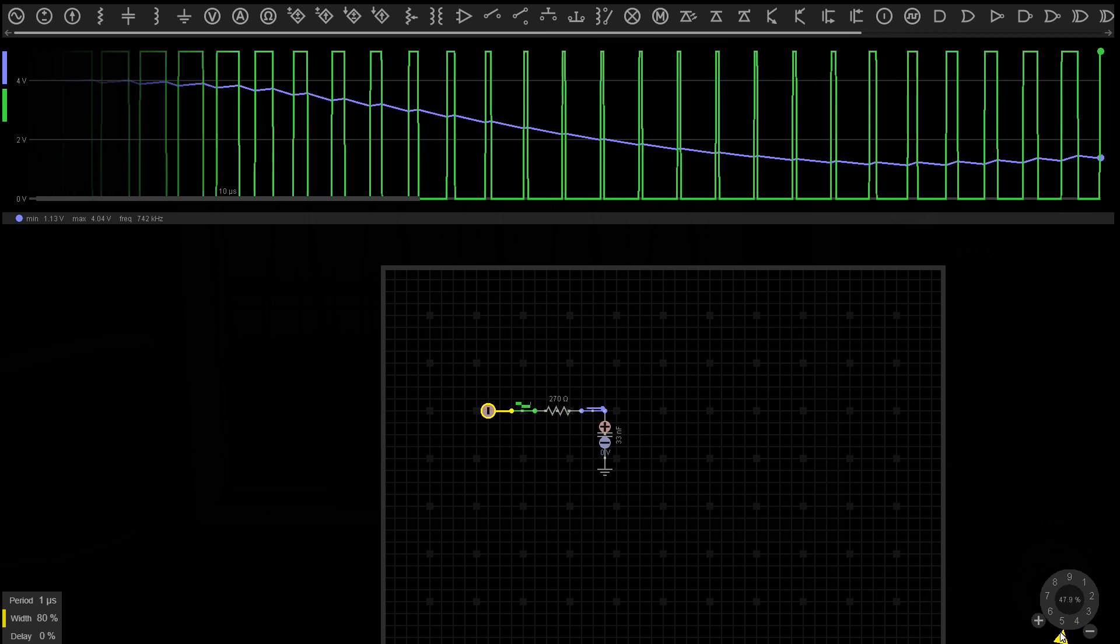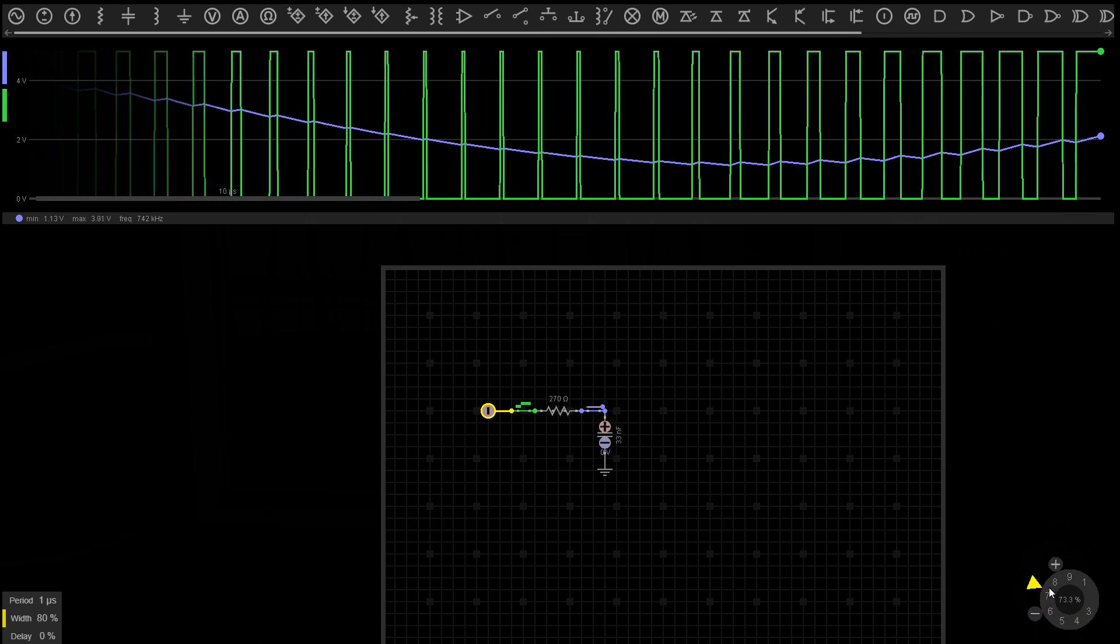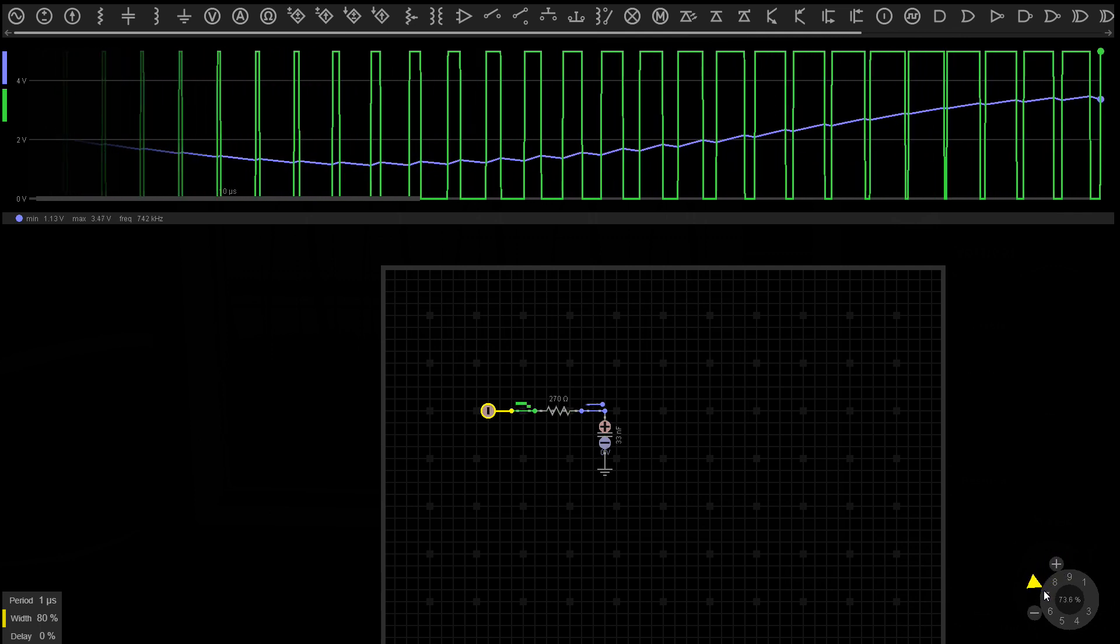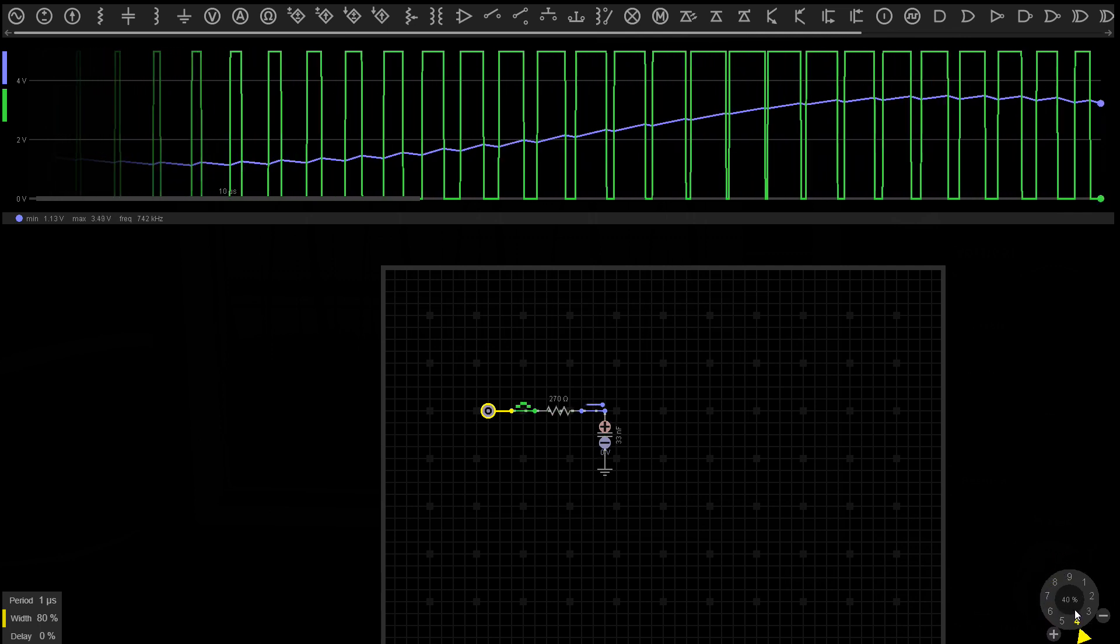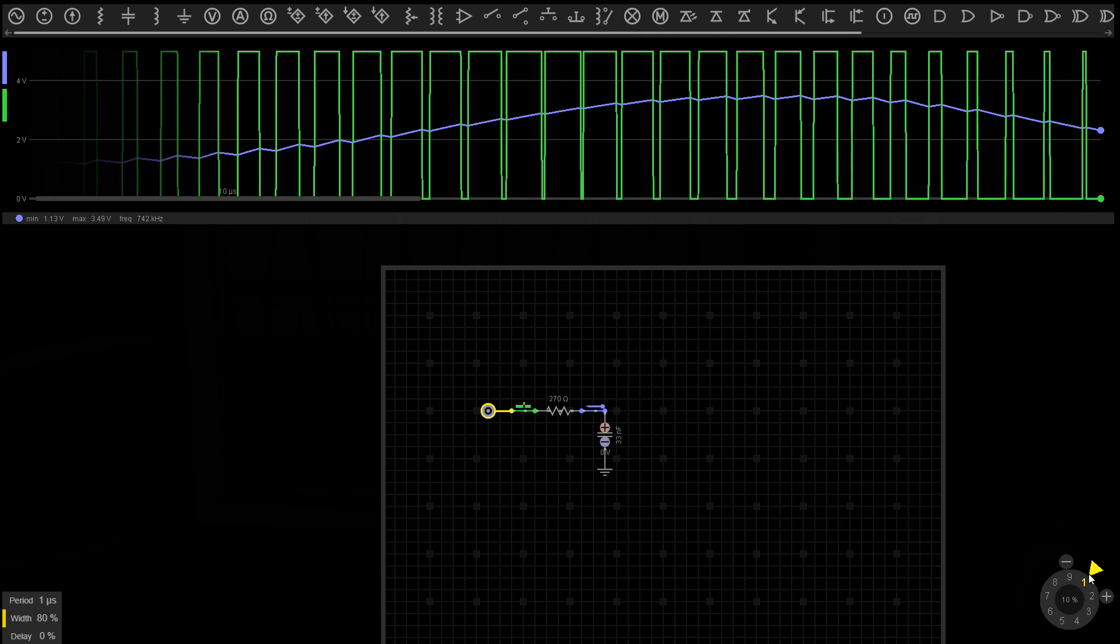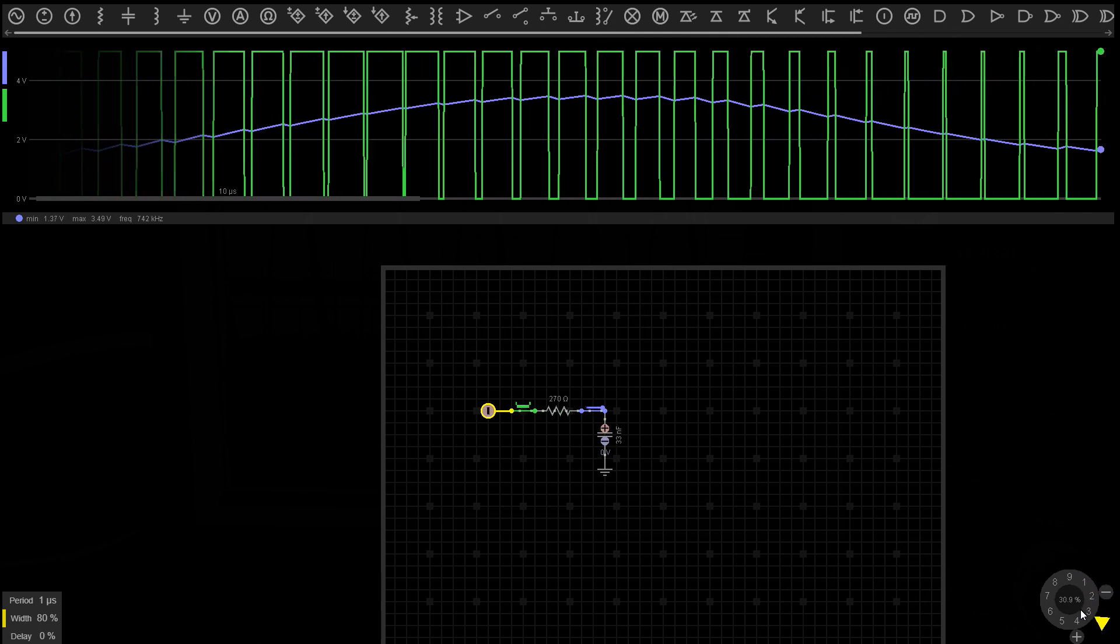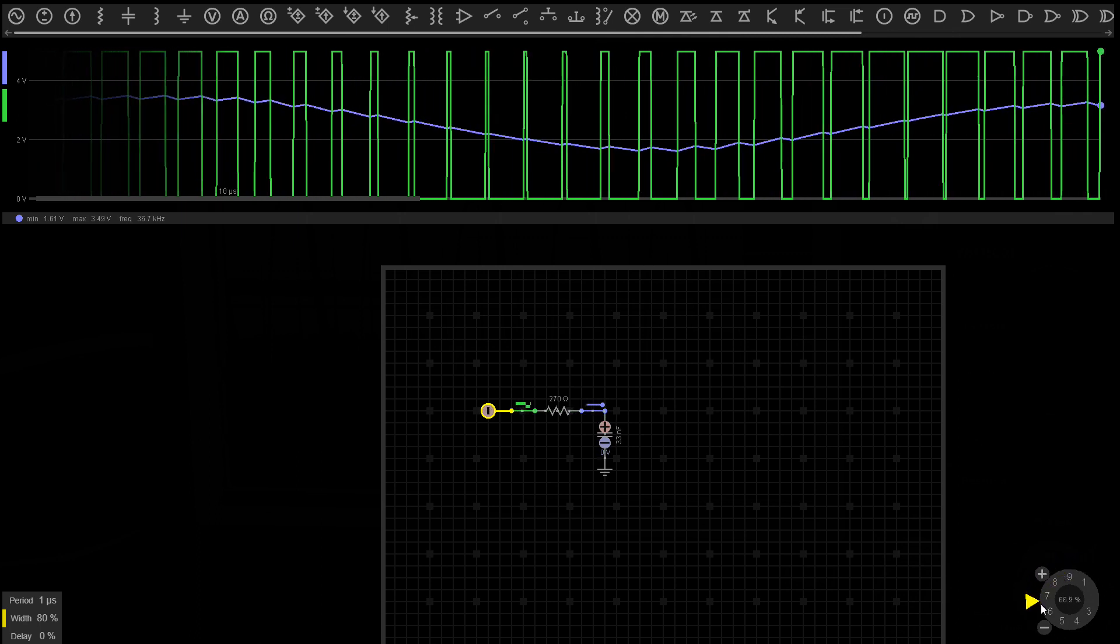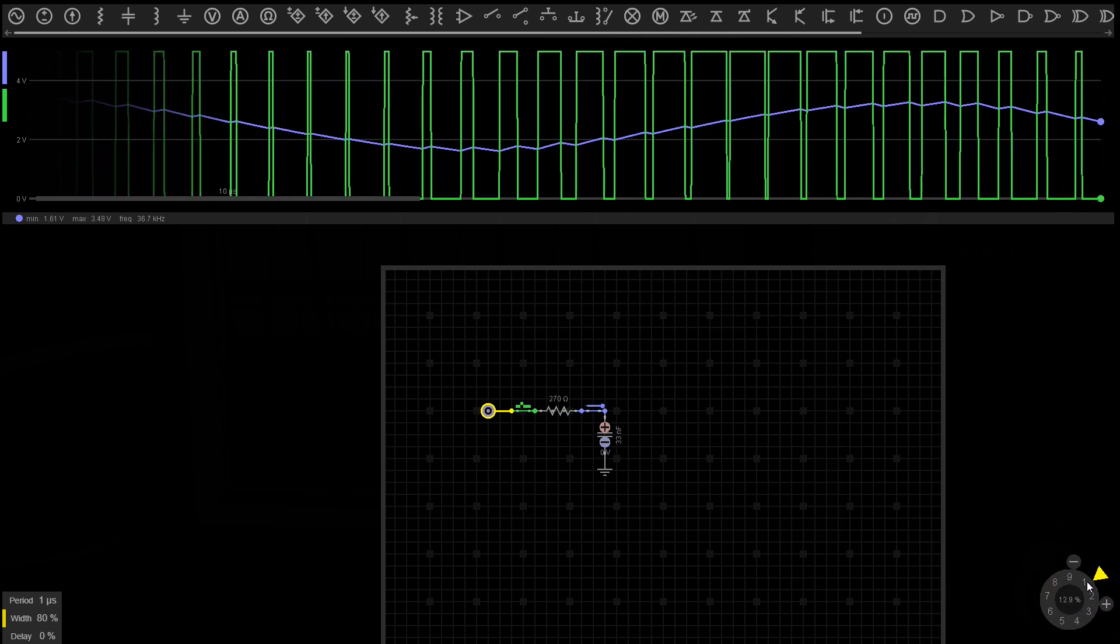That average voltage can be calculated in relation to the duty cycle on the PWM. The pins on the Raspberry Pi are switching between 3.3 volts when they're on and 0 volts when they're off. So when the duty cycle is 50%, the low pass filter will average the voltage to half of 3.3 volts, which is 1.65 volts.